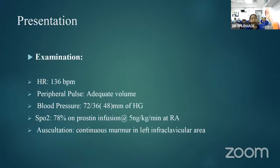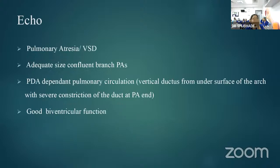On examination, heart rate was 176 bpm, peripheral pulses were palpable, blood pressure was normal, saturation was 78% on prostaglandin infusion. On auscultation, there was a continuous murmur in the left infraclavicular area. ECO showed VSD pulmonary atresia with adequate-sized confluent branch pulmonary arteries, PDA-dependent pulmonary circulation where the vertical ductus arises from the undersurface of the arch, with severe constriction at the PA end, and good biventricular function.